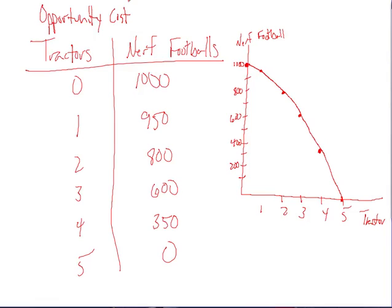In economics, when we talk about cost, cost does not involve money. We're looking at what we're having to give up in order to do something. Financial cost and economic cost are two different things that we'll look at later on in the course. This idea of opportunity cost simply says: what are we giving up to get what we have?